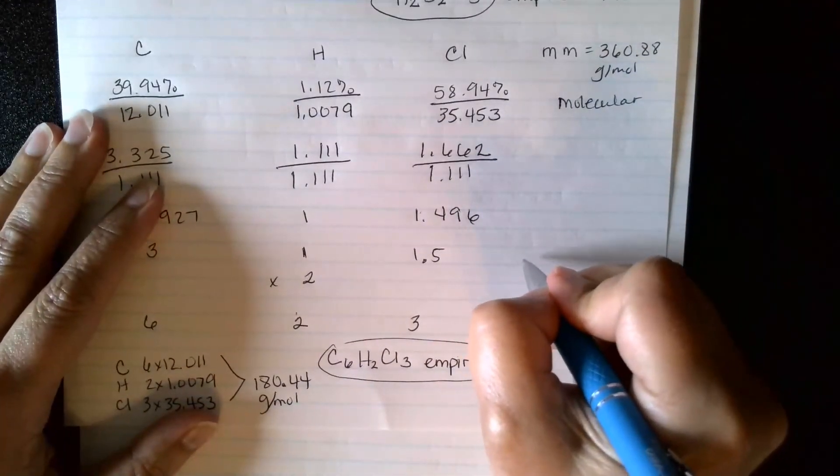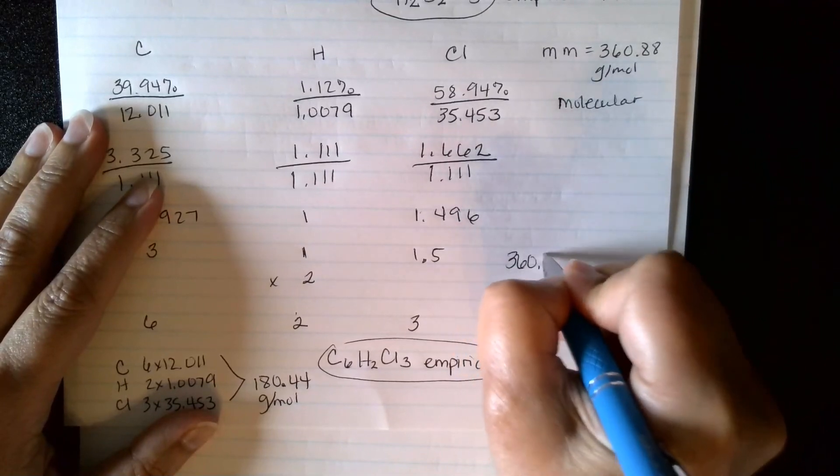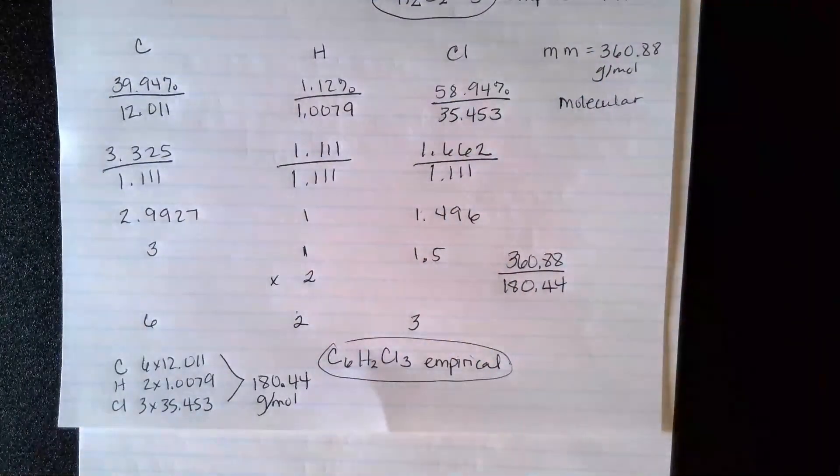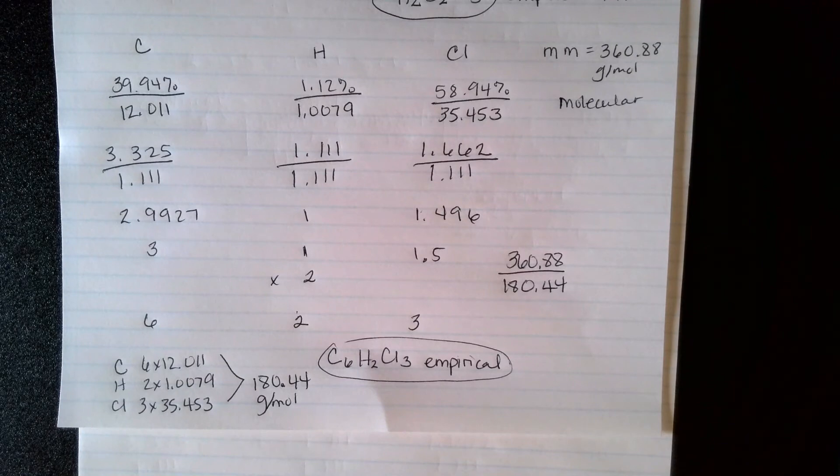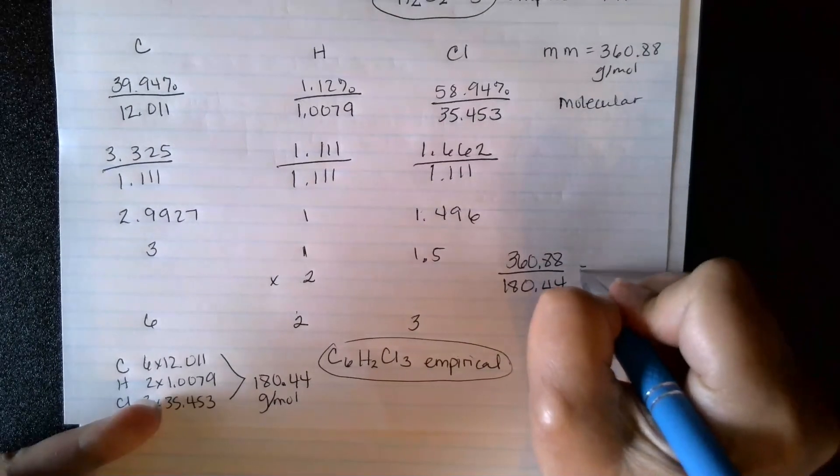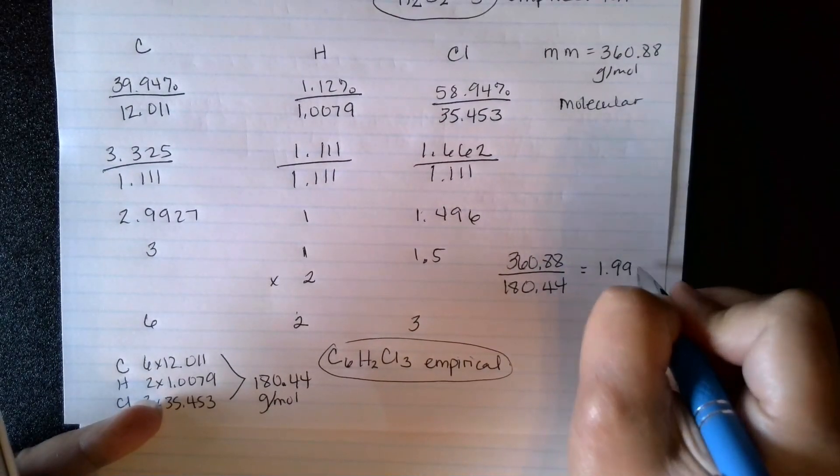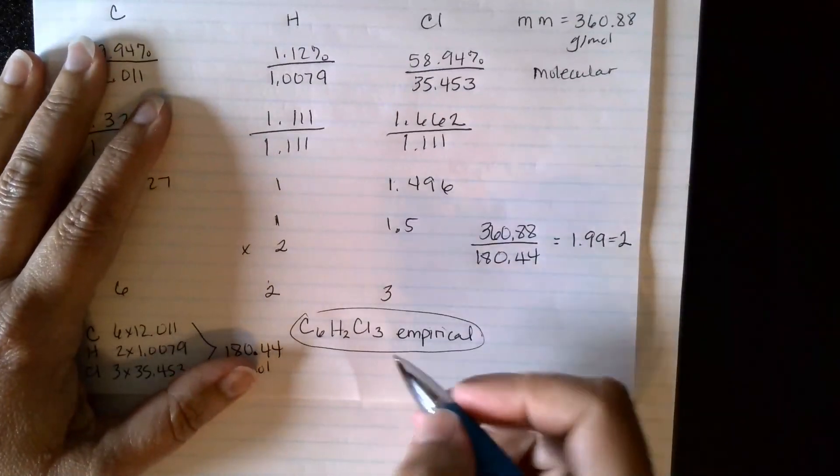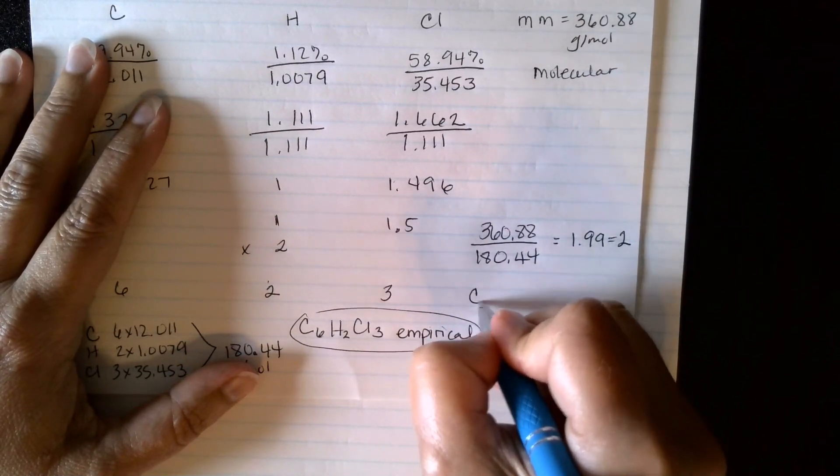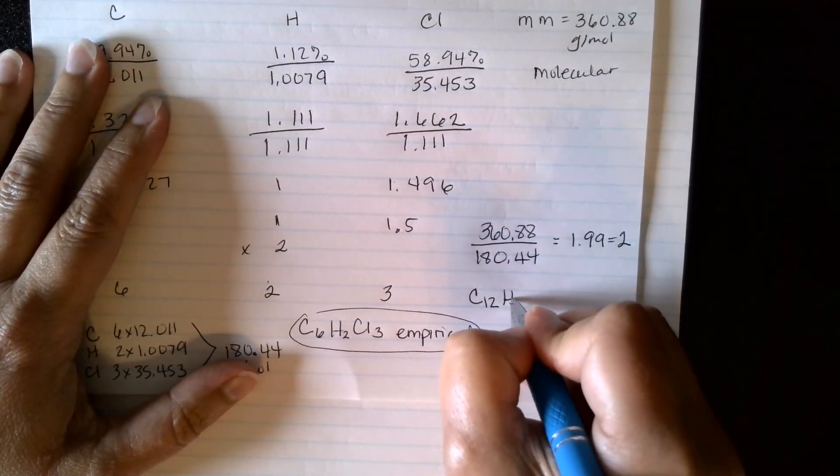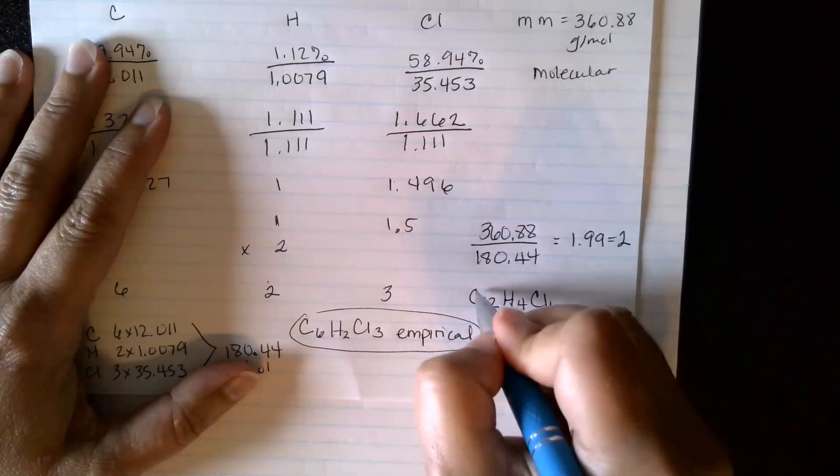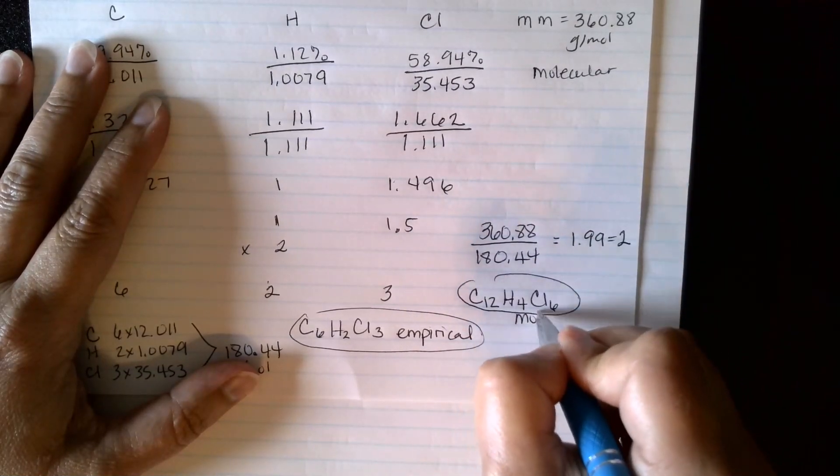And I got 180.44. So 360 is the molecular. My empirical is 180. So if I take my 360.88 and divide by my formula that I got here, that's going to get me my multiple, which is basically 2. So that means everything in my empirical formula gets multiplied by 2. So 6 times 2 is 12. 2 times 2 is 4. And 3 times 2 is 6. So this is my molecular formula.